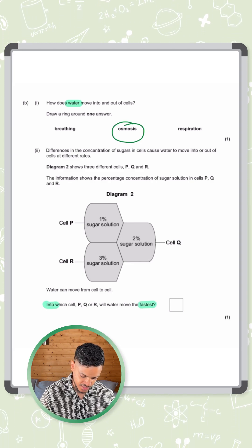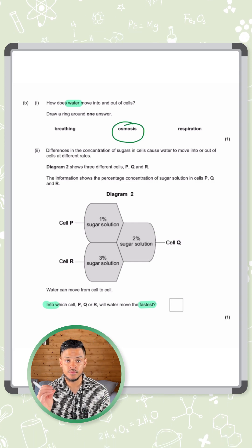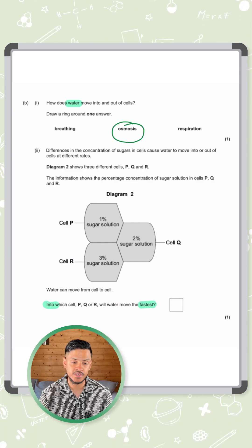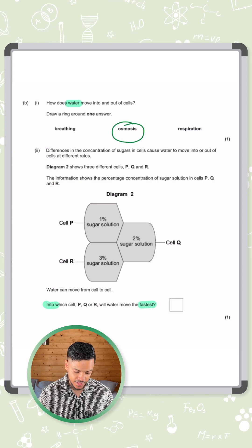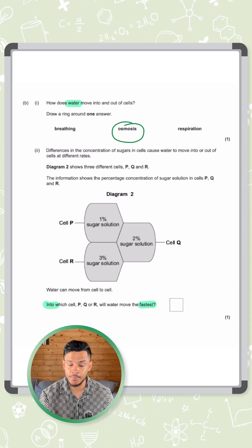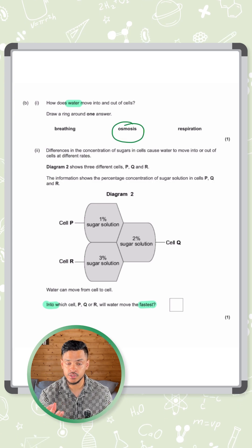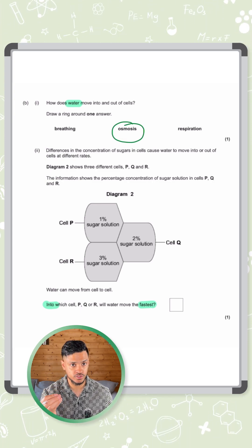It asks into which cell—P, Q, or R—will water move the fastest. So two keywords here: fastest, and into which of these will the water move into. You need to look at the percentage of sugar solution here. What you need to remember is the higher the sugar solution, the lower the amount of water.